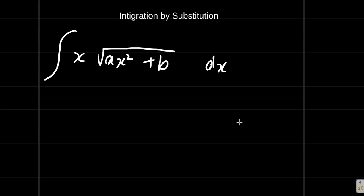We have this to integrate: the integral of x times the square root of ax squared plus b, dx.